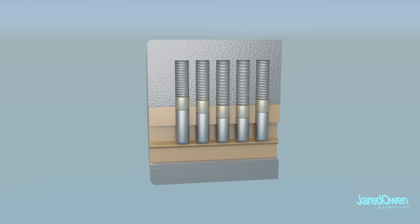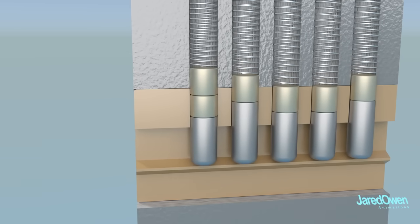For the master key to work, there must be an extra pin in at least one of the vertical shafts. We call this the master pin. Now the plug will turn if there is a key that raises the pins either to here or to here.